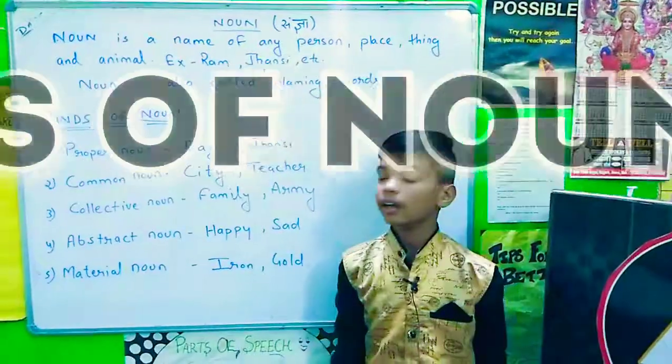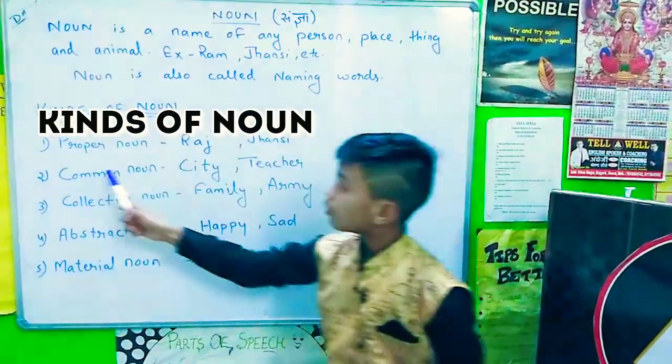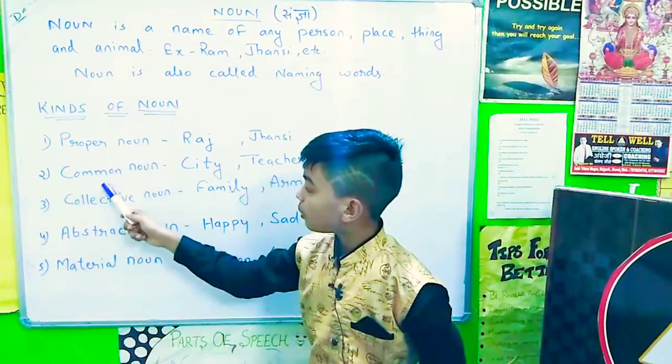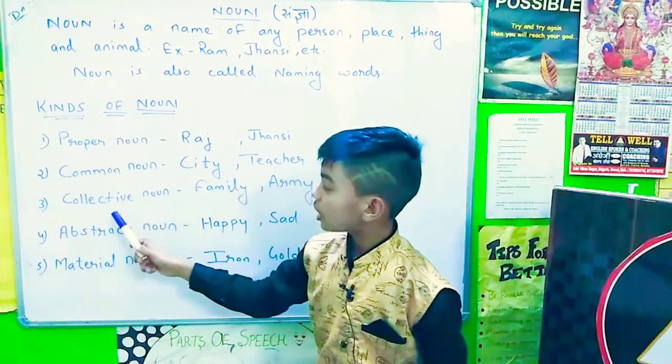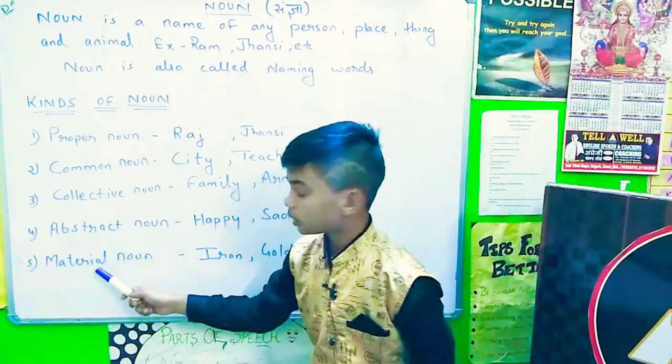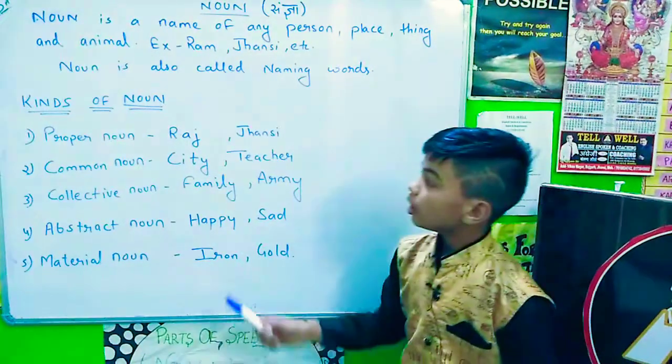There are five kinds of nouns. First, proper noun. Second, common noun. Third, collective noun. Fourth, abstract noun. Fifth, material noun.